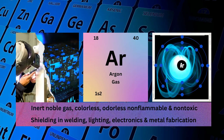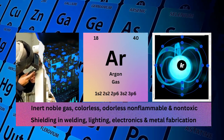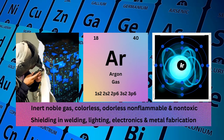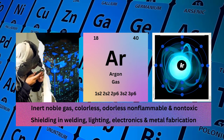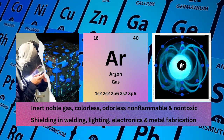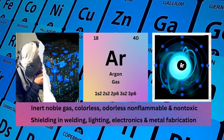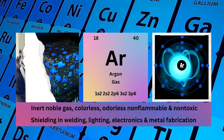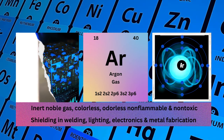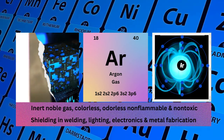Argon, atomic number 18, mass number 40, symbol Ar, state gas, electronic configuration 1s²2s²2p⁶3s²3p⁶. Physical properties: inert gas, colorless, odorless, non-flammable, and non-toxic. Argon used for shielding in welding, lighting, electronics, and metal fabrication.